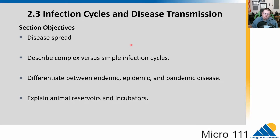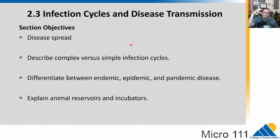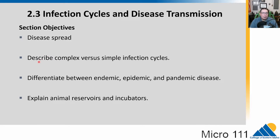We've talked about infectious agents, how we measure them, and disease. Now we're going to talk about infectious cycles and disease transmission. Part of infectious disease is that it can move from one host to another — that microbe can spread disease. Infectious diseases can spread; that's the big thing, versus something like diabetes which you can't really spread person to person.